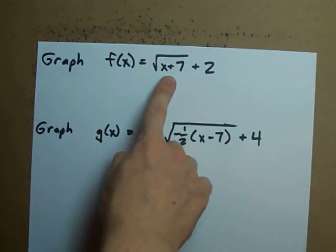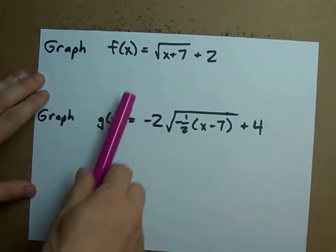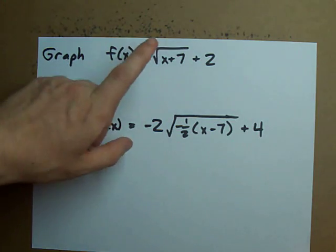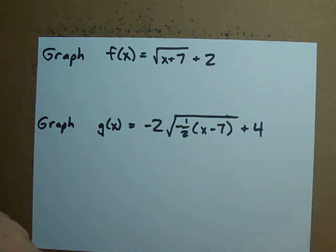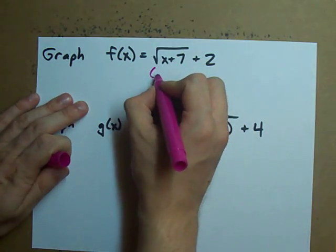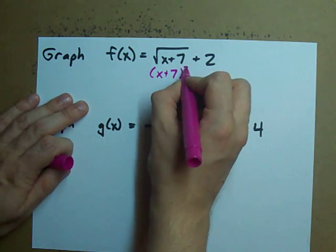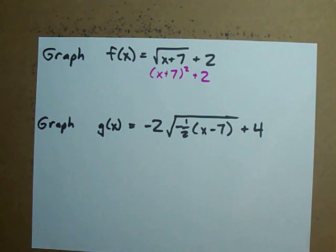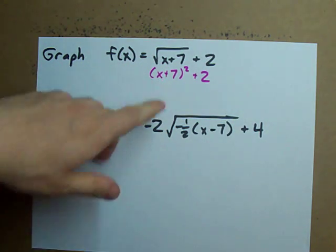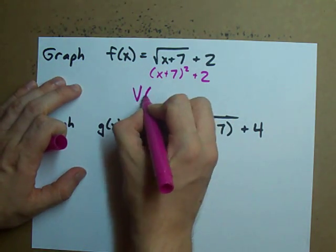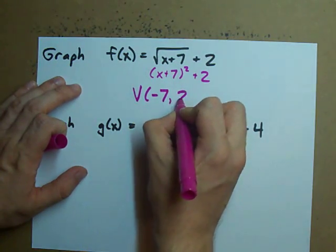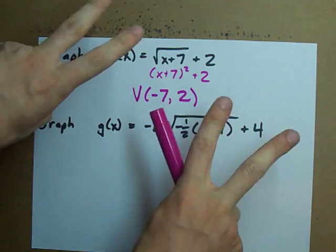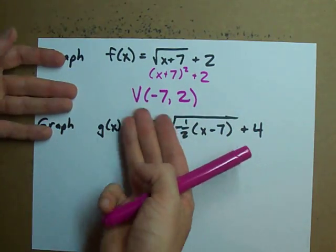Here is a square root function. Square root of x plus seven plus two. This kind of looks like a parabola if it was written like this with a square instead of square root. The vertex of this would have been at negative seven and two and that's going to be the vertex of our square root function as well.